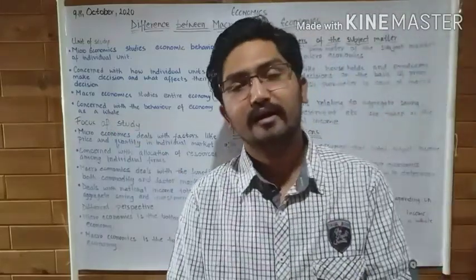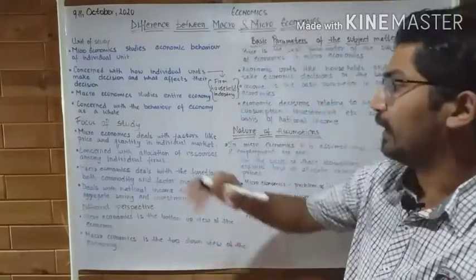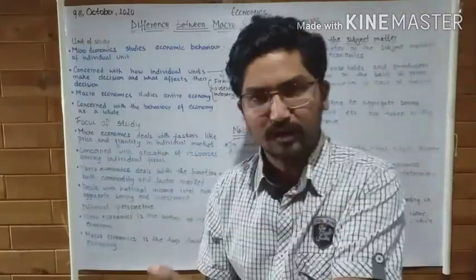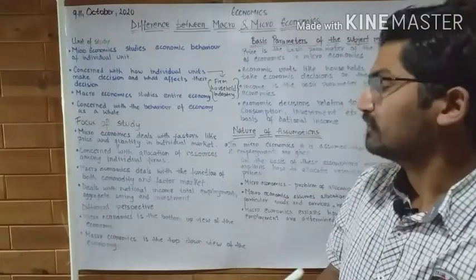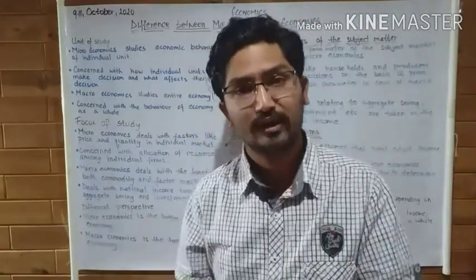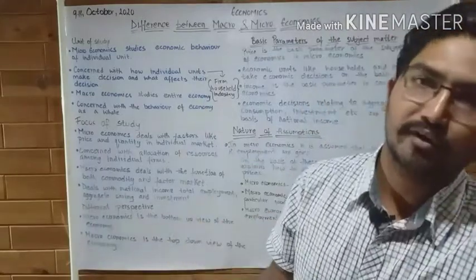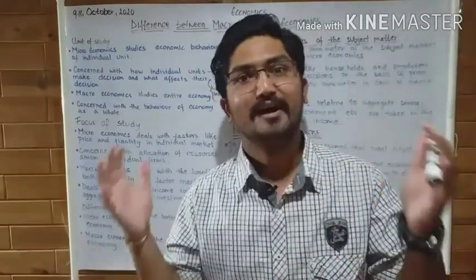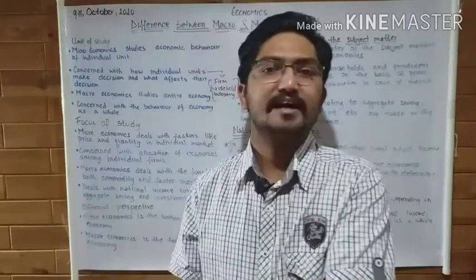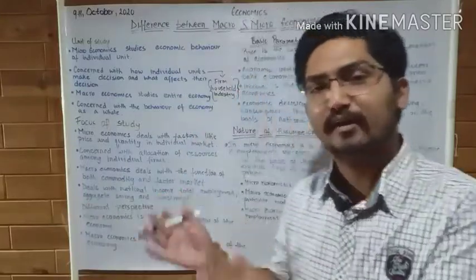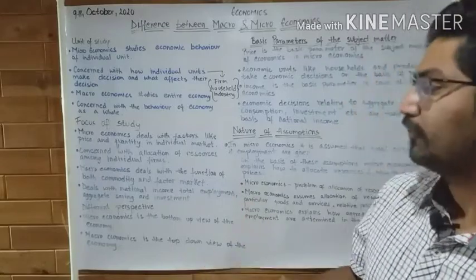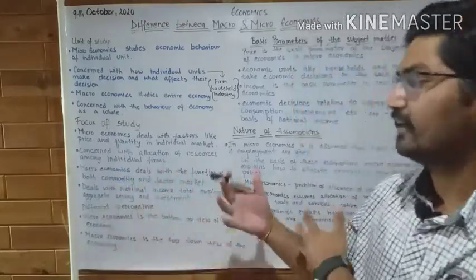To revise: microeconomics deals with price and quantity in individual markets and how resources are allocated, while macroeconomics deals with aggregates — aggregate demand, aggregate supply, aggregate investment, aggregate saving, and other such variables.